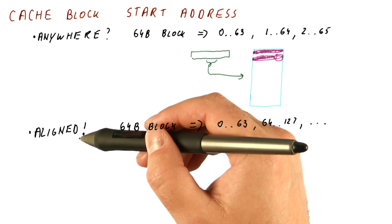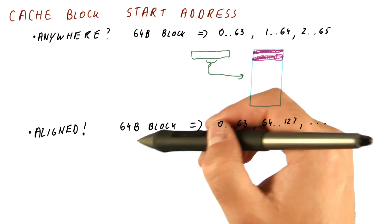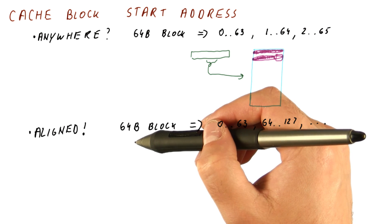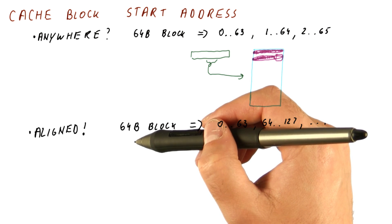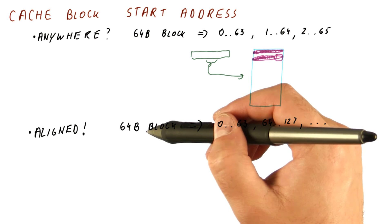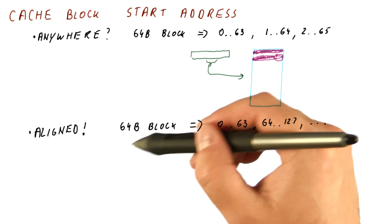Meaning you cannot fetch any 64 bytes or 32 bytes or whatever block size is from memory into the cache. We need to fetch the 64 byte block that contains the data and this block aligned.